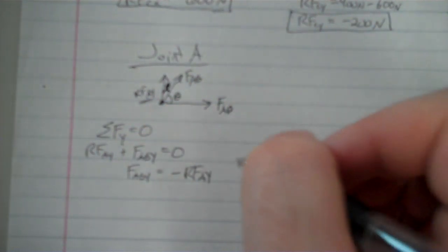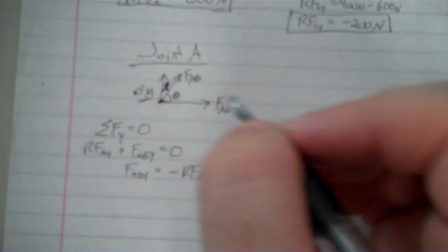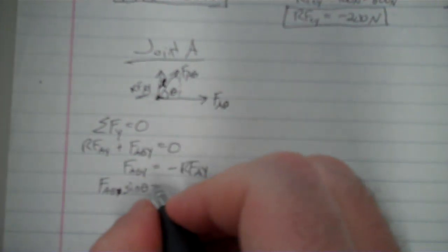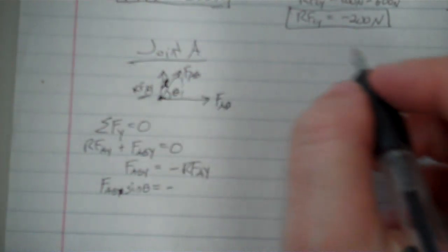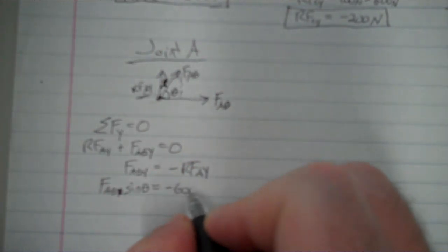So FABY equals negative RFAY. So now I need, if I look at this angle right here, or even better yet, forget that angle, let's look at this angle right here against the horizontal. We usually look at angles from the horizontal. There's no reason we have to, it's just that's the usual convention. So FABY in that direction is really FAB times, this would be kind of this triangle here, this is the opposite side, so times the sine of theta, whatever that angle theta is, and we'll go back and figure that out in a second, is equal to our negative RFAY was, let's back up here, RFAY was 600 newtons, so negative 600 newtons.